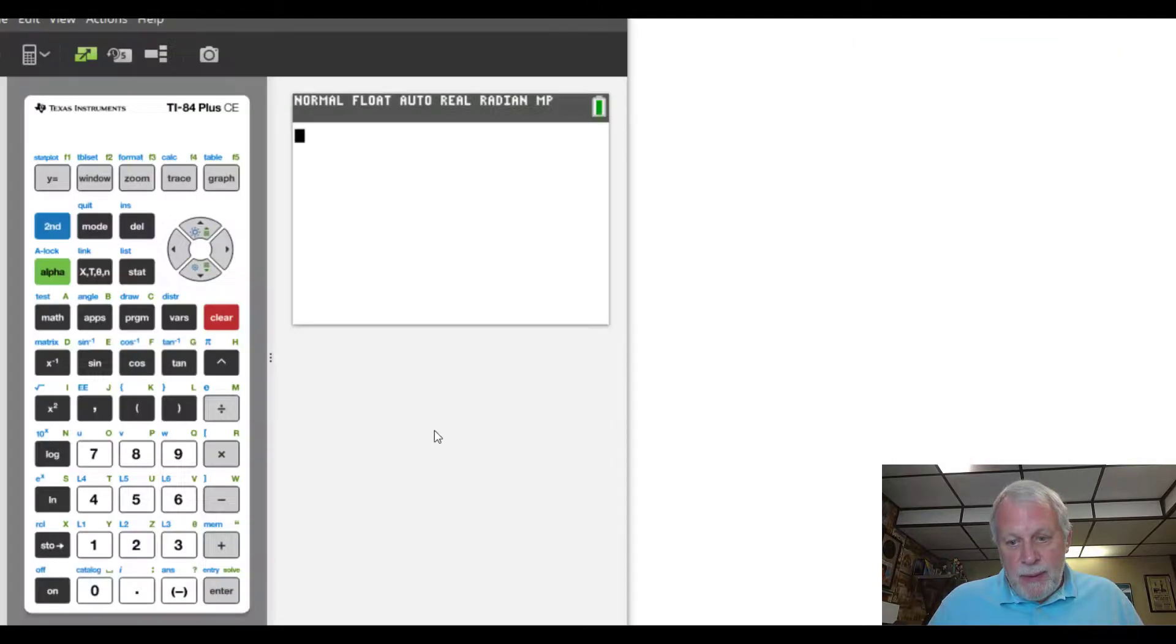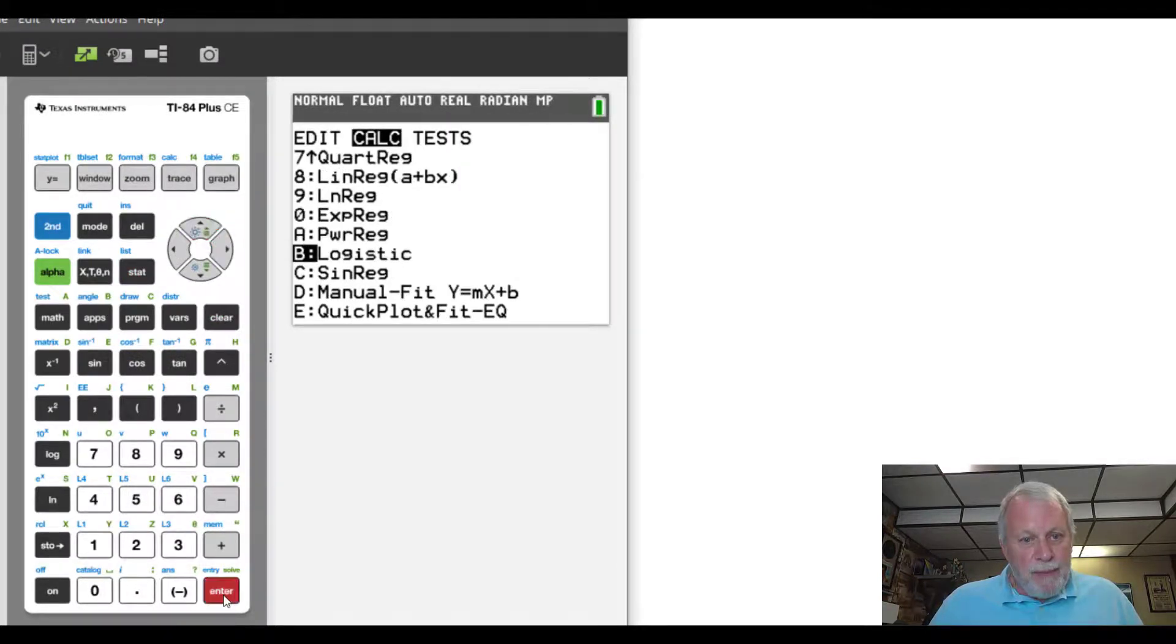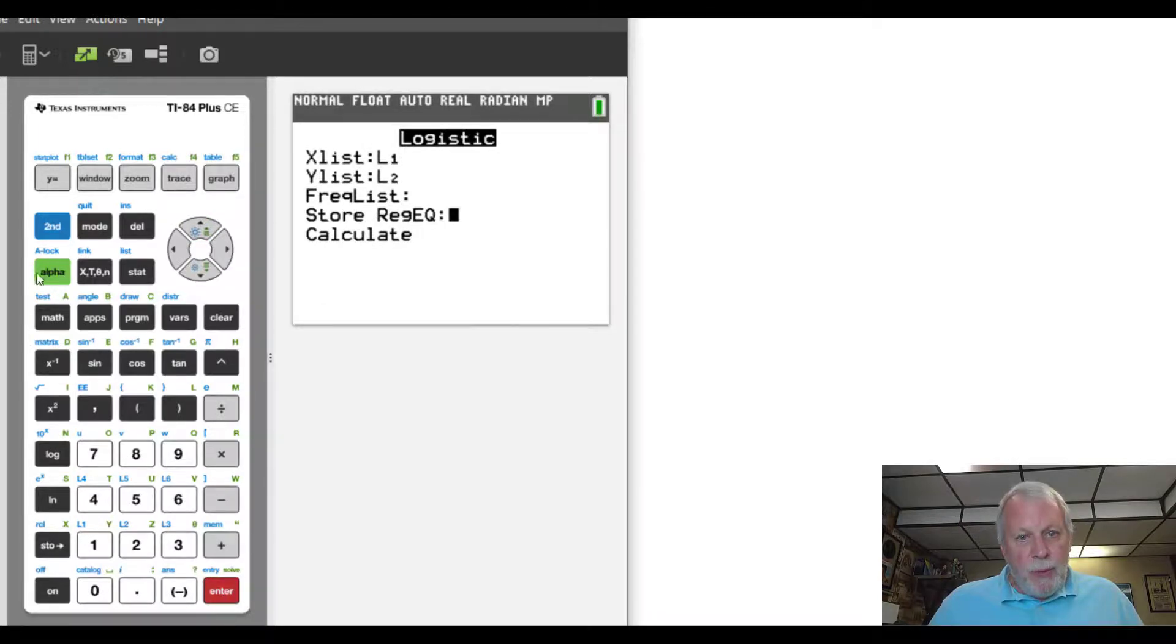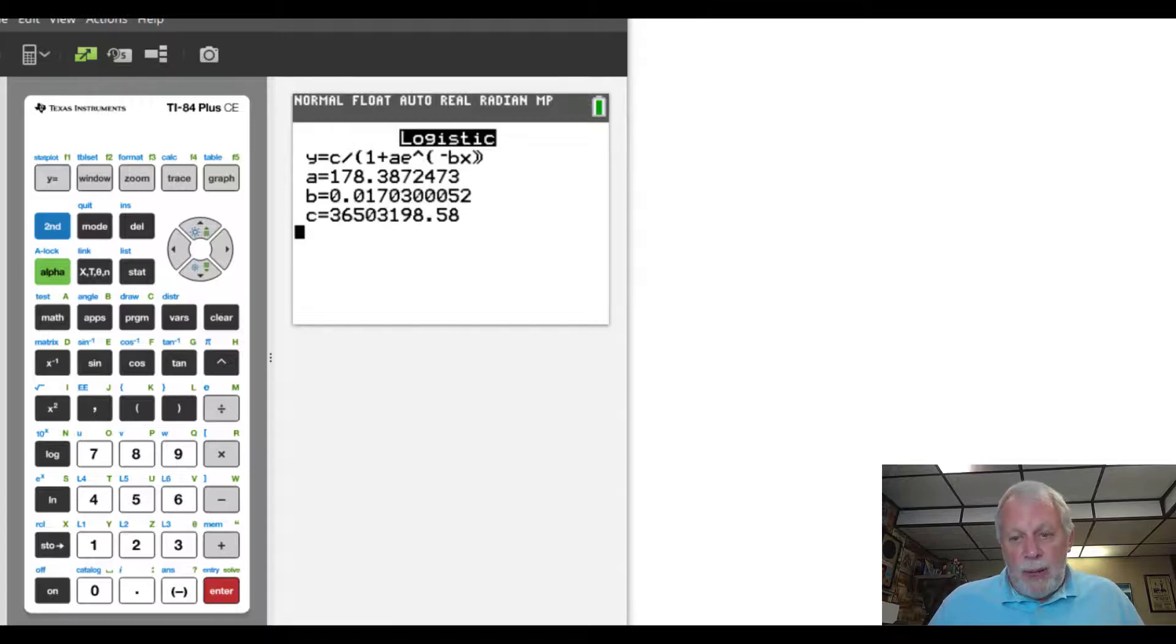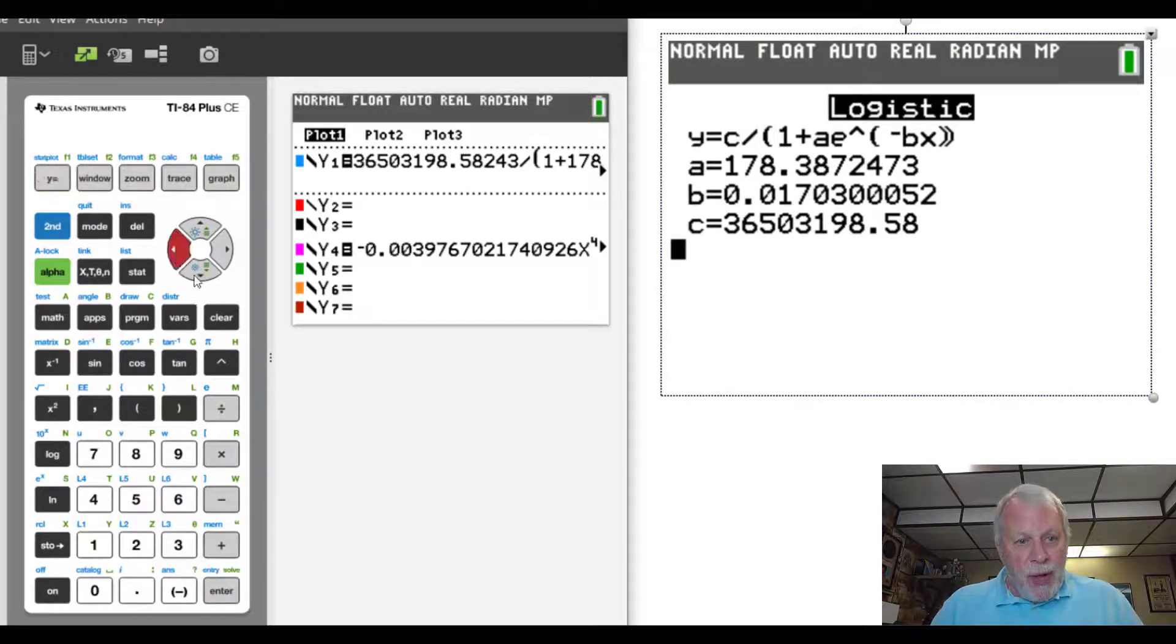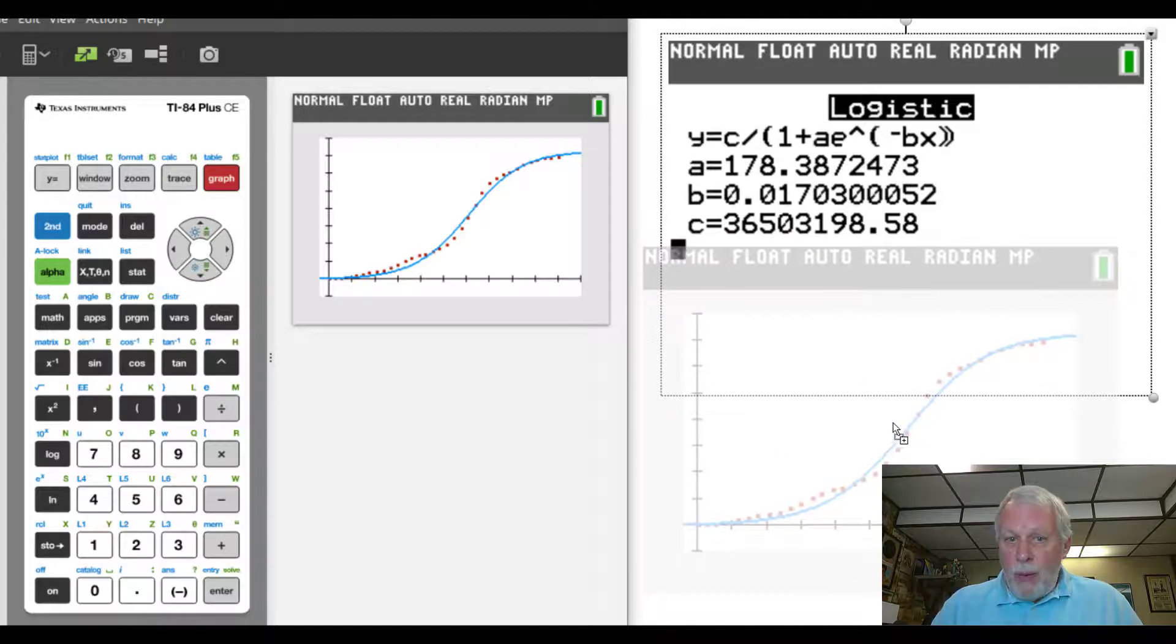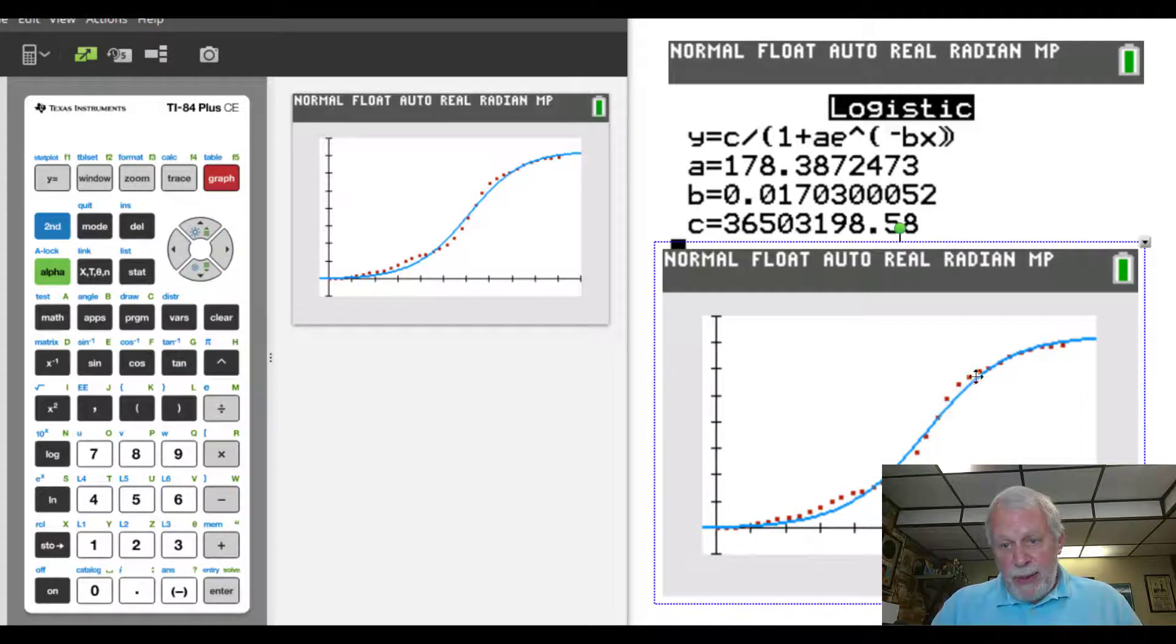So we're going to have to try a logistic one. So let's go ahead and try our logistic. So again, stat, calculate, and logistic is towards the bottom. L1, L2, I'll put this one in y1, alpha trace to get to the y guys, y1. And this time when I press calculate, it is going to take a little while to do that. And I did pause to have that do that. So here's the results we get. But let's go ahead and turn off the one in y4 so we can just see the one on y1. So here's the logistic curve. And wow, that is pretty doggone good. Maybe not so much for interpolation, but for prediction, not too bad. Might be a little high, but looks pretty good.